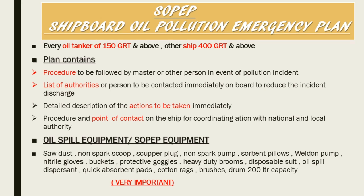SOPEP — Shipboard Oil Pollution Emergency Plan. This is the most important plan asked by surveyors. It applies to all oil tankers above 150 GRT and other ships above 400 GRT. This plan contains all procedures followed by the master or other persons in the event of a pollution incident, including a list of authorities, their contacts, and emergency actions to be taken immediately after an oil spill — whom to contact and what contact details are required. Under SOPEP, the oil spill equipment listed includes sawdust, non-spark scoops, scupper plugs, non-spark pumps, and solvent pillows.